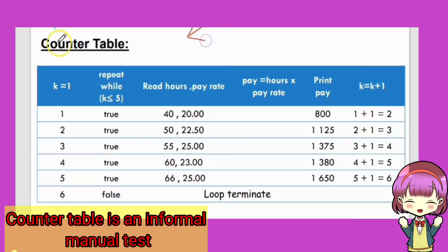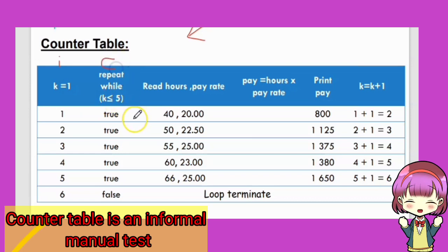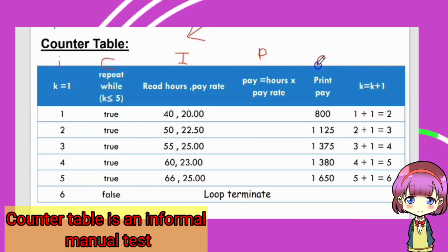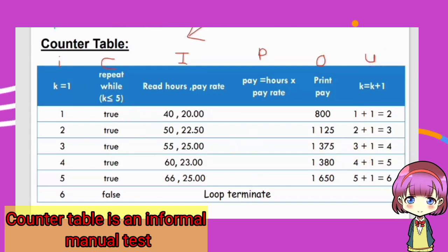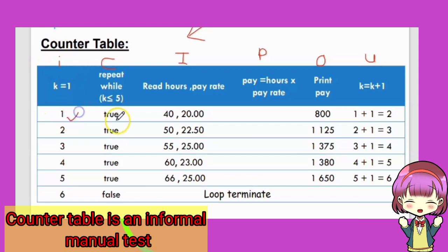This is the counter table for the second problem statement. When k equal to one — this is the initial value. Repeat while k less than or equal to five — this is the condition. The counter table has columns for input, process, output, and updating value. Remember the guideline ICI. For initial value k equal to one: check condition — true.